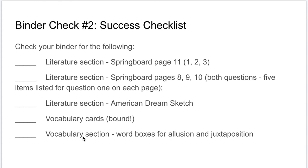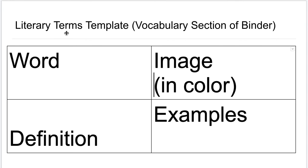In the vocabulary section of your binder, I should see word boxes for allusion and juxtaposition. The very first page in the vocabulary section should be titled 'literary terms template.' When I move that divider, the first page should say 'literary terms template.'